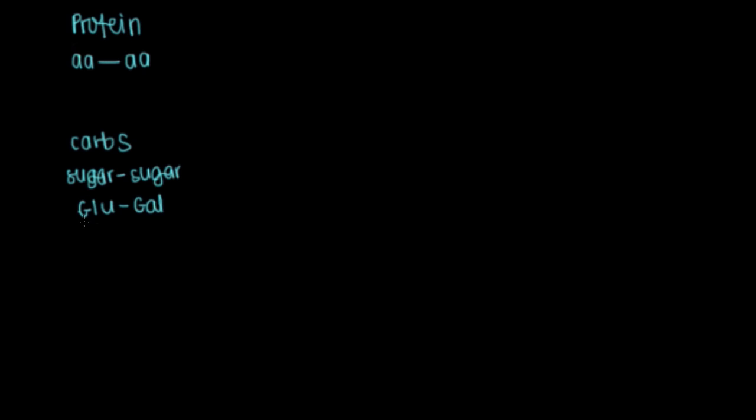So a single sugar would be considered a monosaccharide. Two of them, a disaccharide, and then a whole bunch would be a polysaccharide.